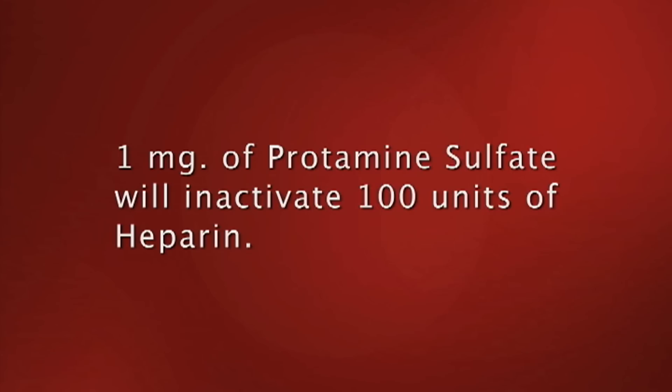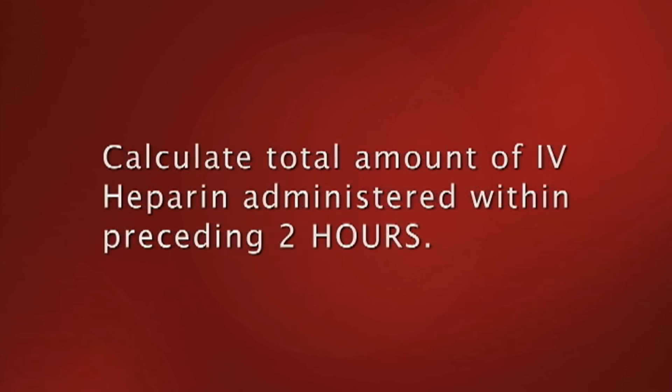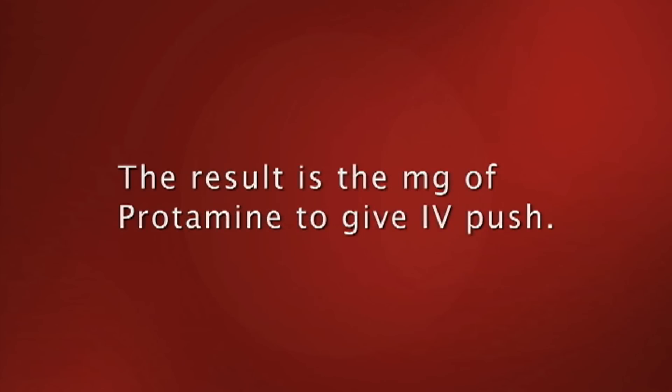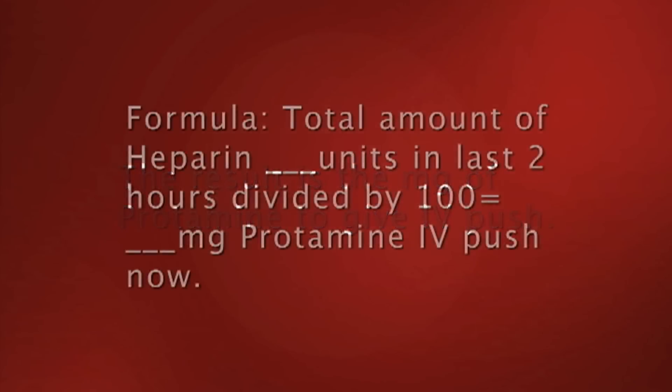One milligram of protamine sulfate inactivates 100 units of heparin. Number one: calculate the total amount of IV heparin administered within the preceding two hours. Number two: take that calculated total and divide by 100 — the result is the milligrams of protamine to give IV push. Total heparin units in the last two hours divided by 100 equals milligrams of protamine IV push.